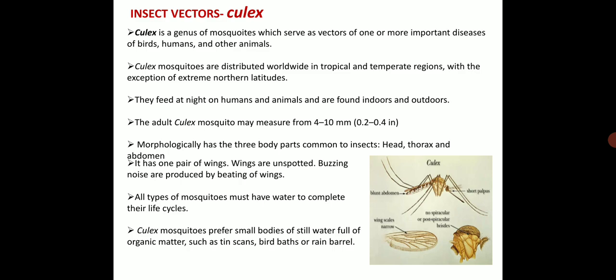Morphologically, the insect body has been divided into head, thorax and abdomen and it measures about 4 to 10 mm. It has one pair of wings. The wings are unspotted. Buzzing noise is produced by beating of wings. All types of mosquito must have water to complete their life cycle and they prefer small water bodies which contain organic matter such as tin cans, bird baths or rain barrels.